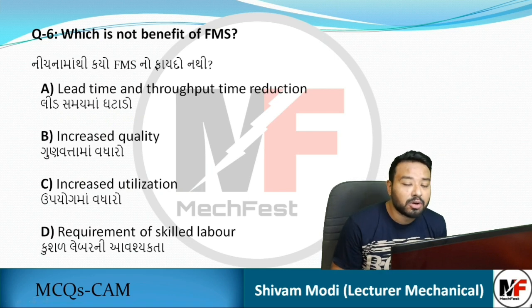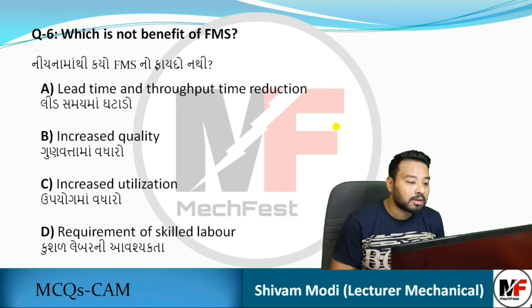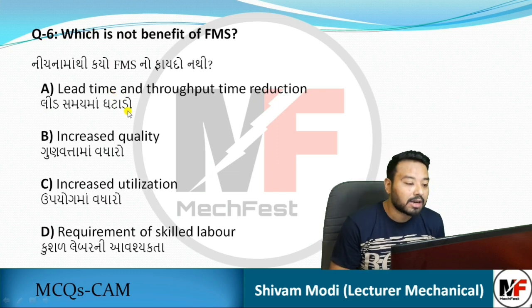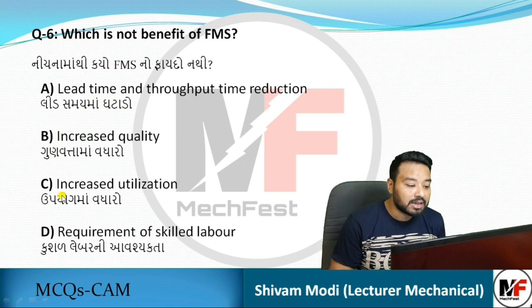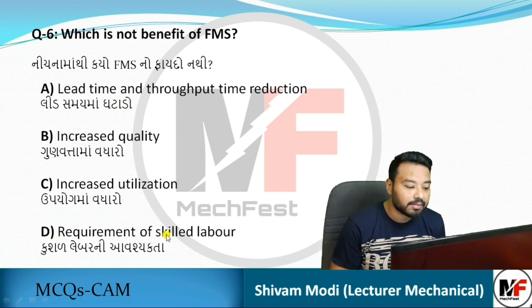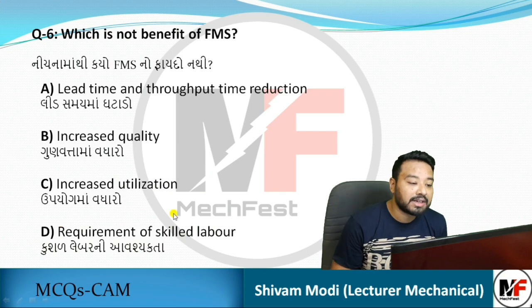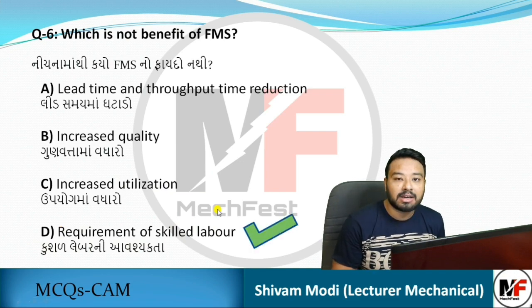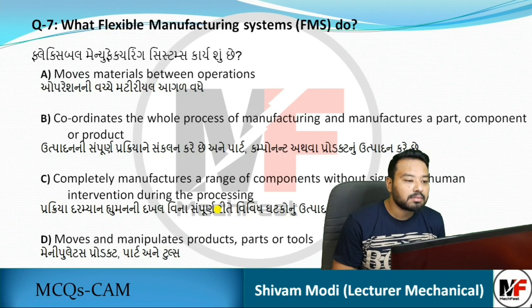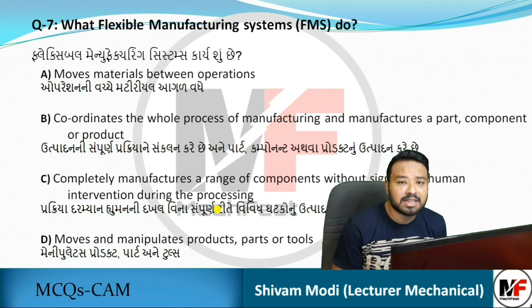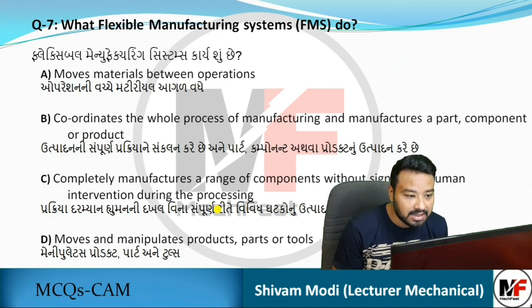Next question: which of the following is NOT a benefit of FMS? Options include reduction in lead time, increase in quality, increase in utilization, and requirement of skilled labor. The requirement of skilled labor is not a benefit of FMS — it is a disadvantage. So the answer is D.